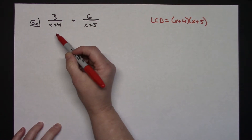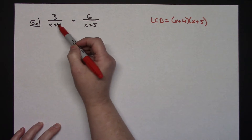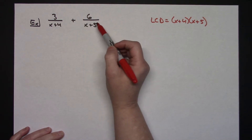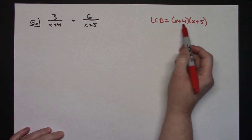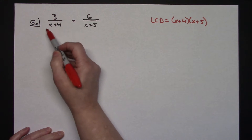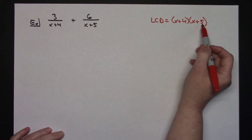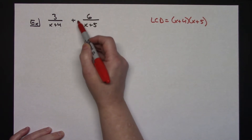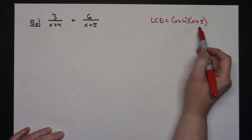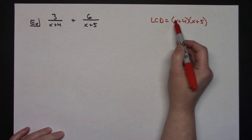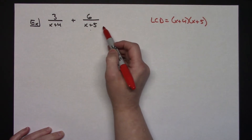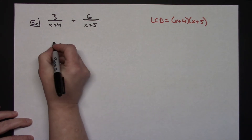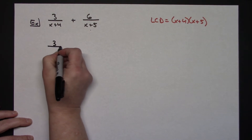Recalling regular fractions, I need to multiply each fraction by whatever it's missing from the least common denominator. The first fraction already has x plus 4, so it's missing the x plus 5, and I'm going to multiply by a form of one to alter this fraction. The second fraction already has x plus 5, so it doesn't have the x plus 4, and I'll multiply by a form of one.